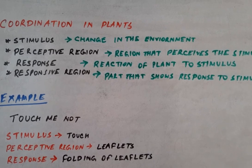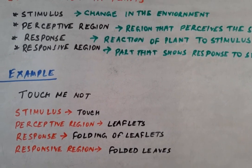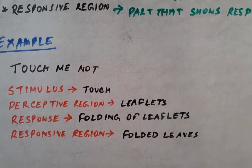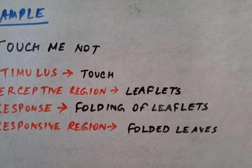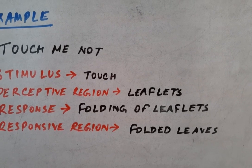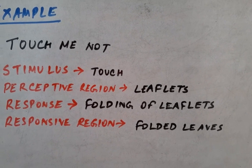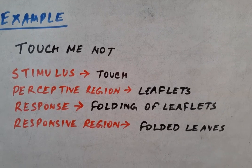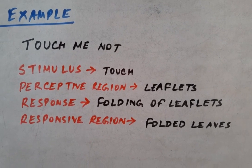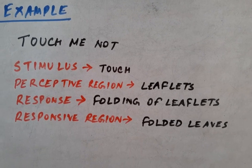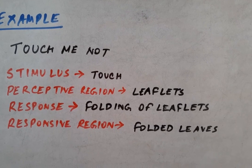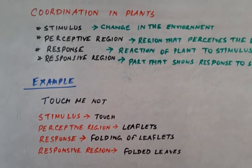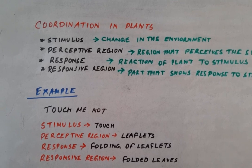Taking the example of the touch-me-not plant: the stimulus is touch, the perceptive region is the leaflets of the compound leaves. In response, the leaflets fold — so the responsive region is the folded leaves. The leaves fold because the cells at the base of the leaflet gain or lose turgor pressure, which is the reason why they fold.